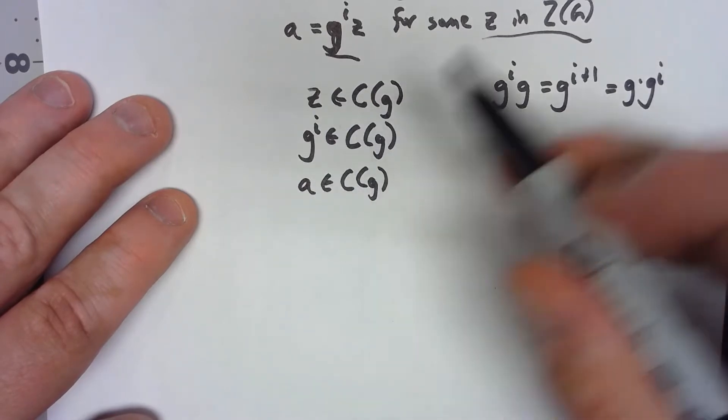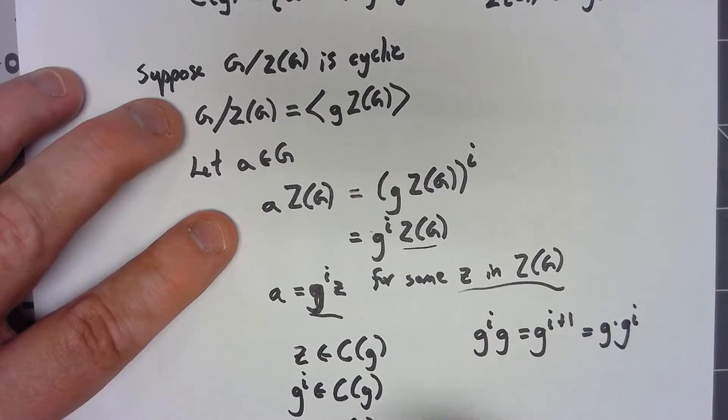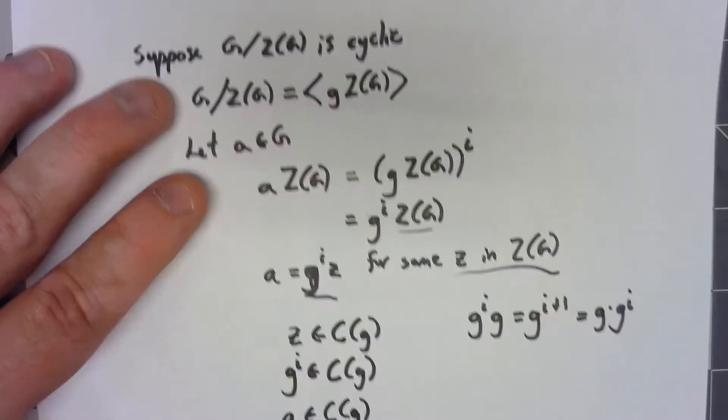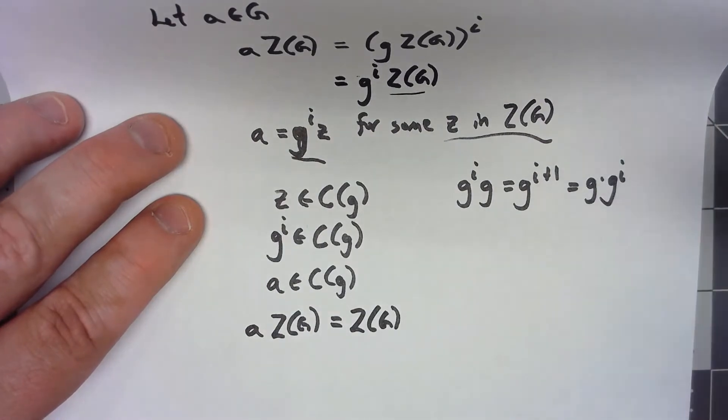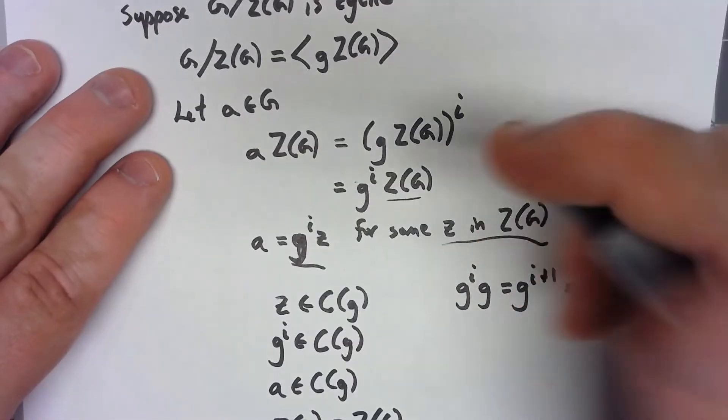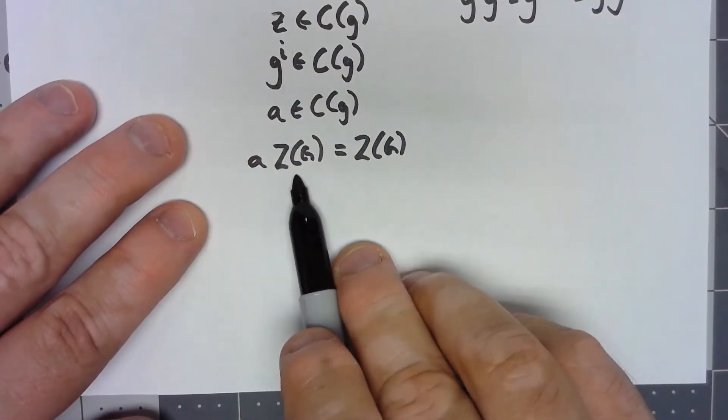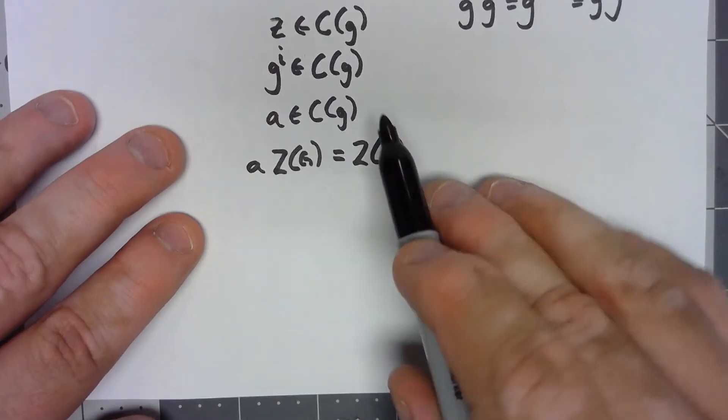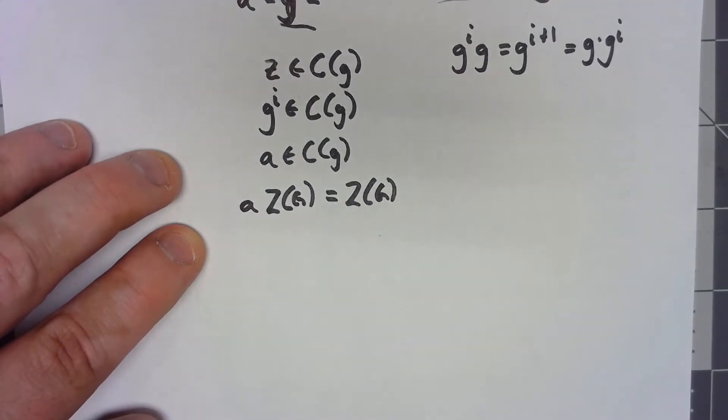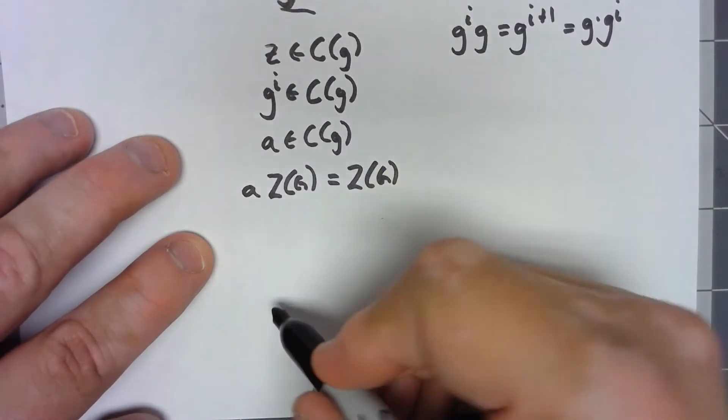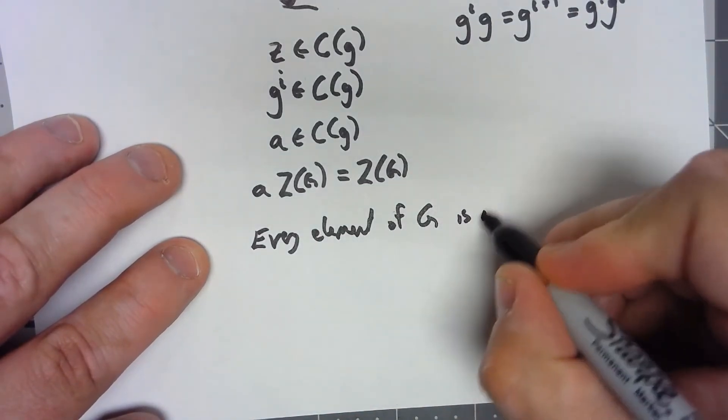But if A is in the centralizer of G, going back here, A times Z of G, since A is in that subgroup Z of G, that means that the coset A Z(G) is in fact Z of G. Now there's so many little details, it's easy to get lost. But let's remember, up here, we just said A was any element of G. Any element of G, we said, the coset is equal to that. So what that means is that every element of G is in Z of G.